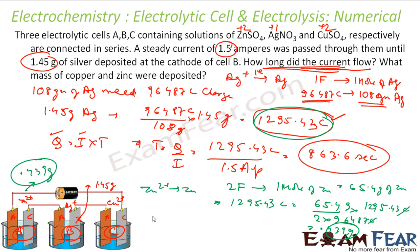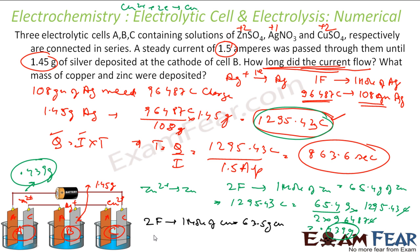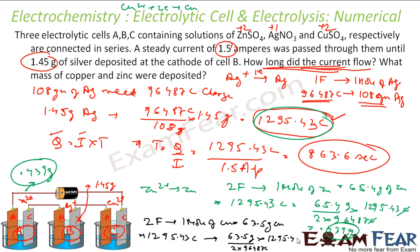Similarly for copper: Cu²⁺ takes 2 electrons, so 2F charge is required for 1 mol (63.5 g) of copper. Mass of Cu = (63.5 ÷ (2 × 96,487)) × 1295.43 = 0.426 g. So 0.426 g of copper is deposited.